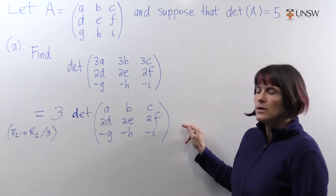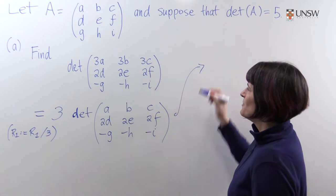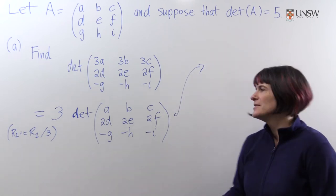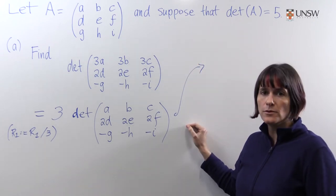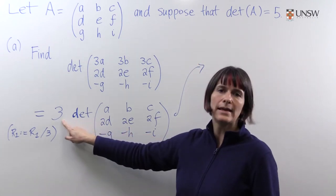Now we'll try it again with the second row. To fix the second row to make it look like A, we'll take out a factor of two, and that two will appear here.